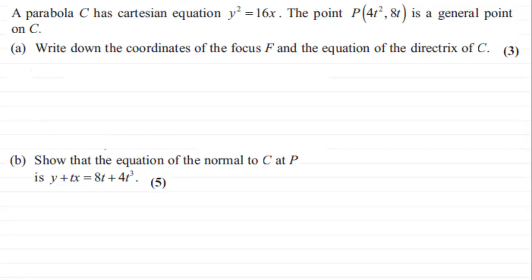Okay, welcome back if you had a go. So what we've got here anyway is a parabola C has Cartesian equation y squared equals 16x. And the point P with coordinates 4t squared, 8t is a general point on C. And what we've got to do first of all is write down the coordinates of the focus F and the equation of the directrix of C.